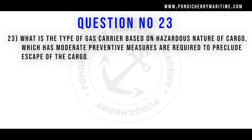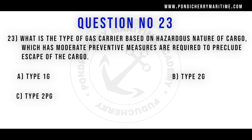Twenty-third question. What is the type of gas carrier, based on the hazardous nature of the cargo, which has moderate preventive measures required to preclude the escape of the cargo? Option A. Type 1G. Option B. Type 2G. Option C. Type 2PG. Option D. Type 3G. Correct answer is option D: Type 3G.